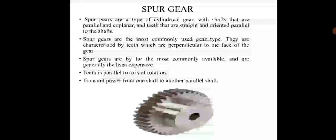Now we are going to discuss the spur gear. Spur gears are a type of cylindrical gear with shafts that are parallel, and the teeth are straight and oriented parallel to shaft. Spur gears are the most commonly used type gear, characterized by teeth which are perpendicular to the face of the gear. The teeth are parallel to the axis of rotation and transmit power from one shaft to another. The diagram shows the spur gear.